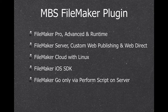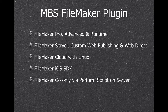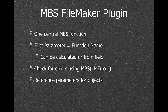For FileMaker Go, there's no way to get a plugin into it directly, but you can use Perform Script on Server. For example, the user takes a picture with FileMaker Go, it's put in a container, transferred to the server, and the server runs a script to rotate the picture. You see the rotated picture in FileMaker Go. If you want to use the plugin locally on the iOS device, you need the FileMaker SDK.